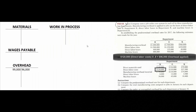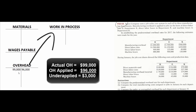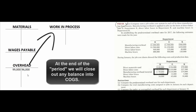The actual overhead incurred during the month is $99,000. We only applied $96,000, so we're $3,000 under-applied. Hopefully next month will be $3,000 over-applied and it will even out. If it doesn't, at the end of the period we'll close a small amount into cost of goods sold, or if it's a large enough number, we'll sprinkle some into cost of goods sold, some into finished goods, and some into work in process.